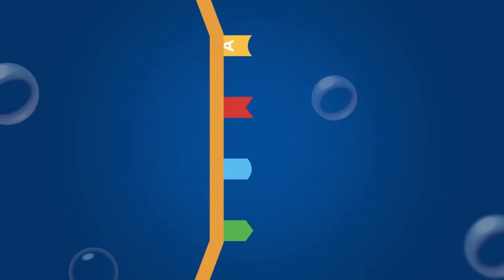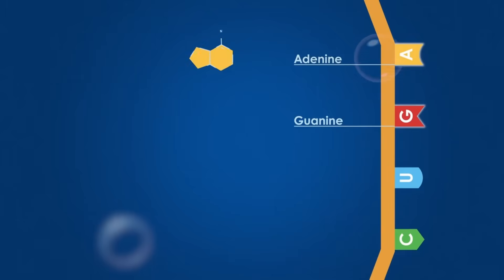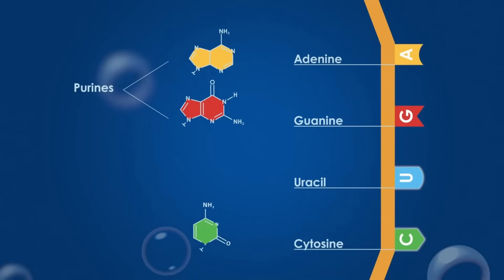RNA molecules are composed of a single strand of ribonucleotides with four different bases. Adenine and guanine, which are double-ringed bases called purines, and cytosine and uracil, which are single-ringed bases called pyrimidines.